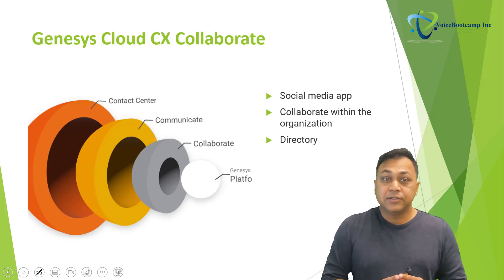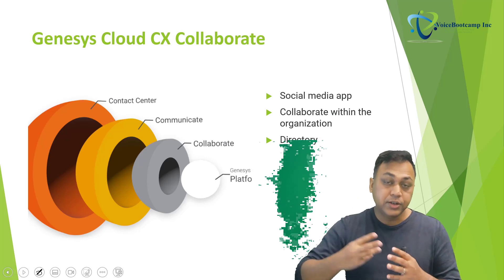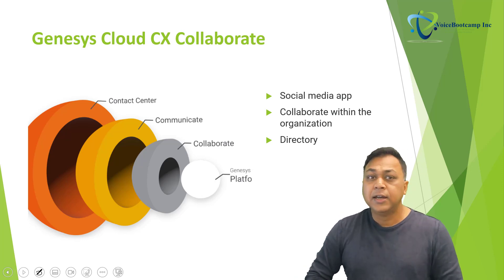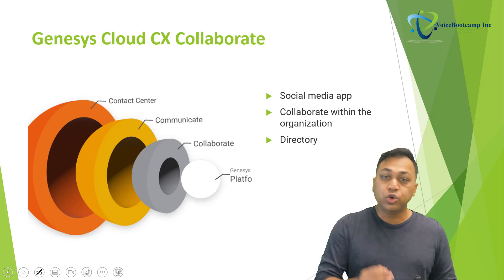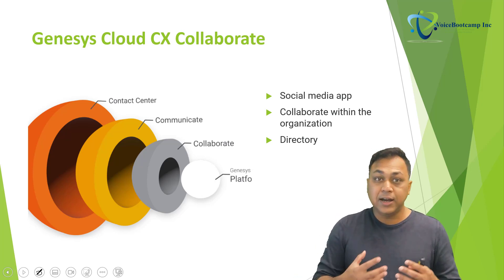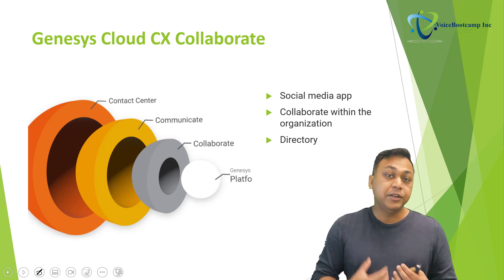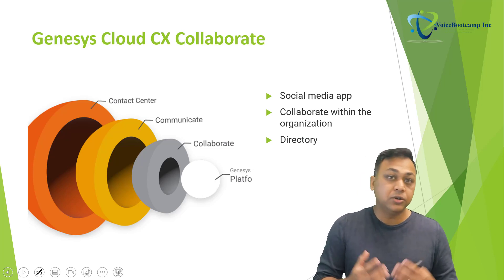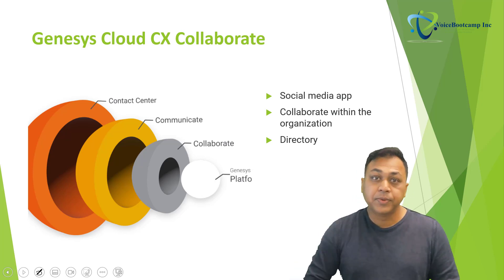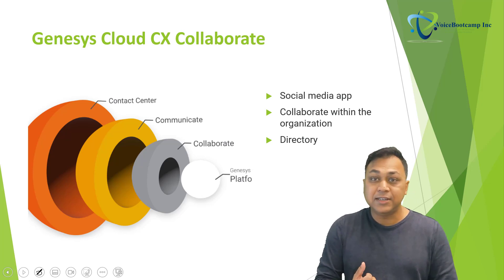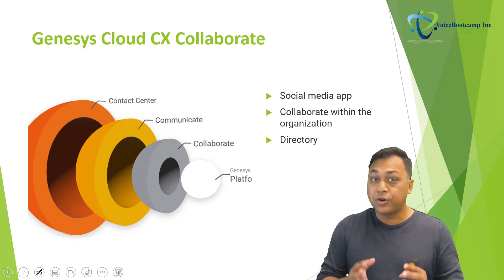The Genesis Cloud CX has three different components. The first is called Genesis Cloud Collaborate. Genesis Cloud CX Collaborate is a social media app that helps users collaborate within the organization. For example, you may have five or twenty employees, and you add them to Collaborate by creating their profiles. These employees can communicate, see each other, chat with each other, and engage with each other. You can also use Collaborate to provide a centralized directory service that contains user details such as their name, education, hobbies, skills, physical location, and department within a given organization.